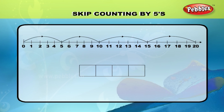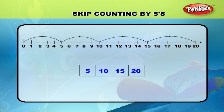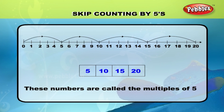Skip counting by fives. In the given number line, starting from zero, when you jump by fives, we reach the numbers 5, 10, 15, and 20. These numbers are called the multiples of five.